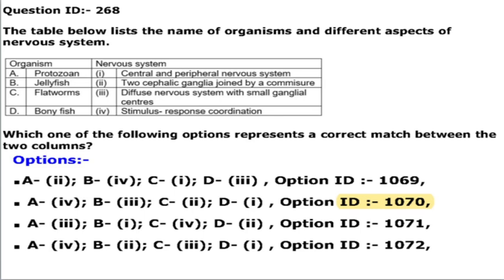Next question involves a table listing organisms and different aspects of the nervous system — a technical question mostly answerable by pure zoology students. Protozoans have stimulus-response coordination. Jellyfish have a diffuse nervous system with small ganglia centers. Flatworms have two cephalic ganglia joined by a commissure. Bony fishes have a central nervous system and peripheral nervous system.